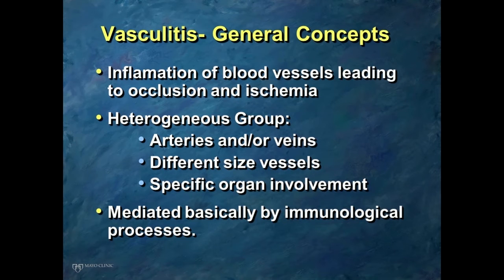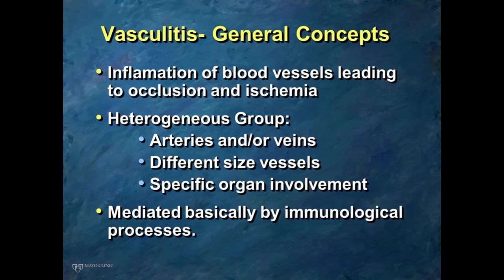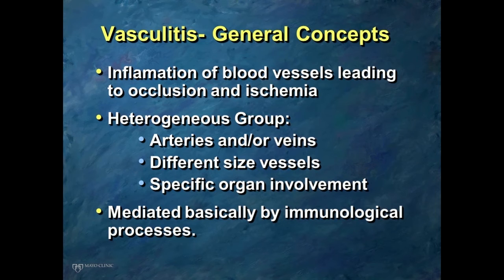There are a few areas that are common for most of the vasculitic syndromes. These are conditions that happen because there's inflammation of blood vessels, and the symptoms occur either because of occlusion and ischemia of the tissues, or because of the systemic inflammatory process that goes along with them. These conditions can affect different size vessels, different types of vessels — sometimes arteries or veins — and sometimes specific organs, sometimes isolated to a specific organ.